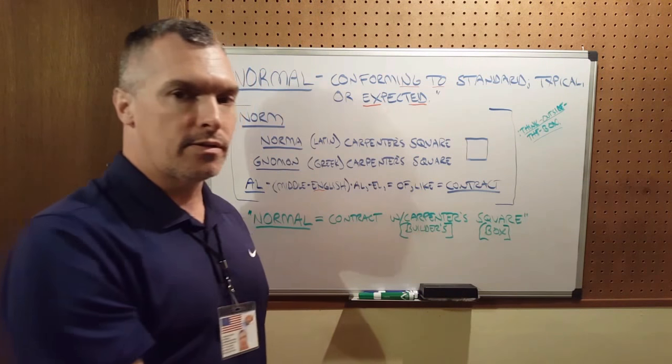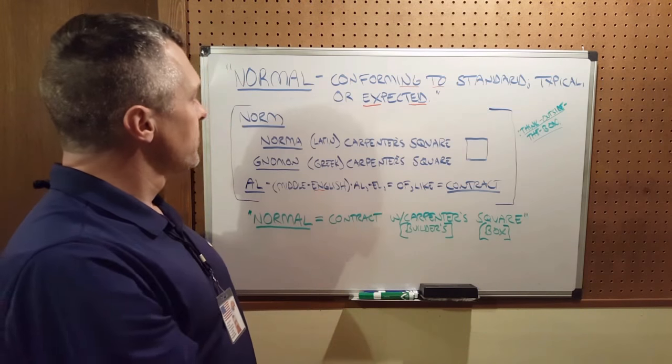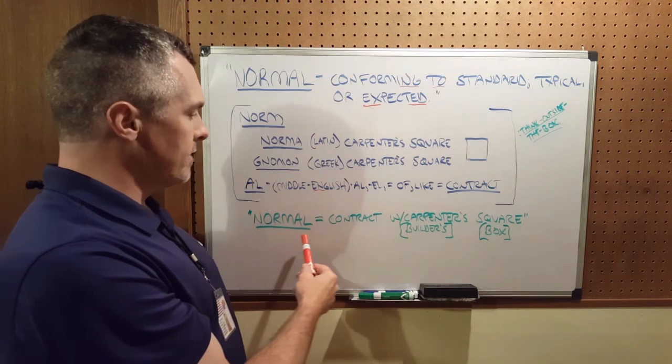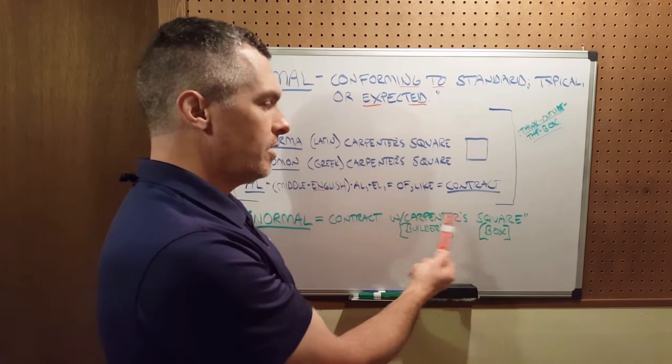Therefore it's a contract. I define normal as contract with a carpenter's square.